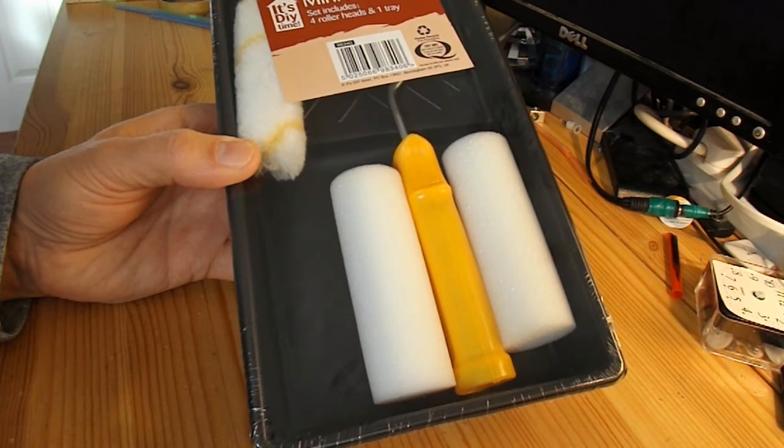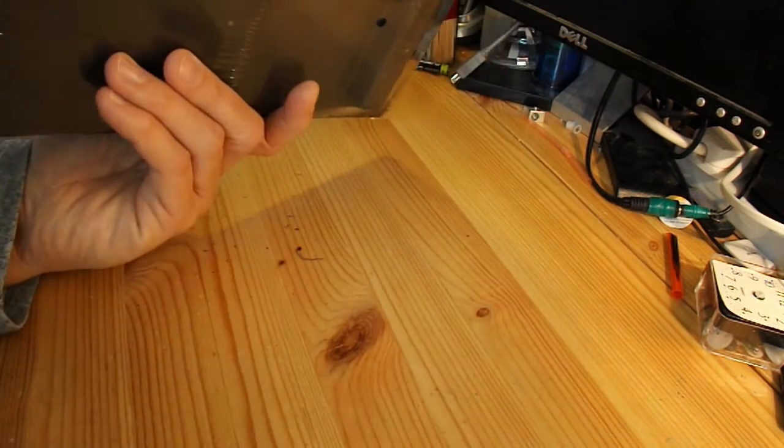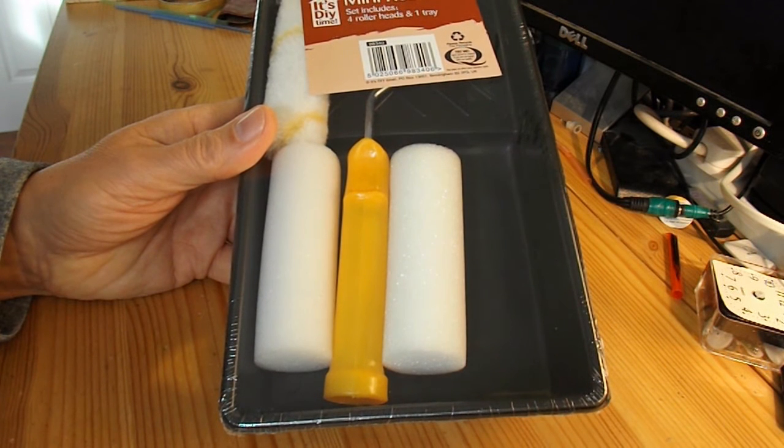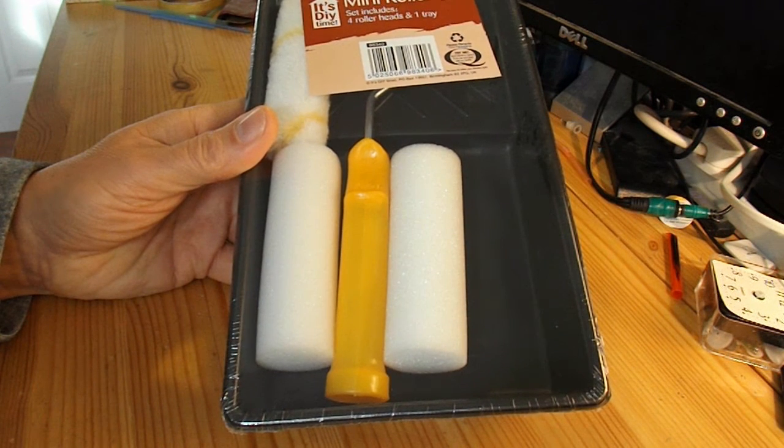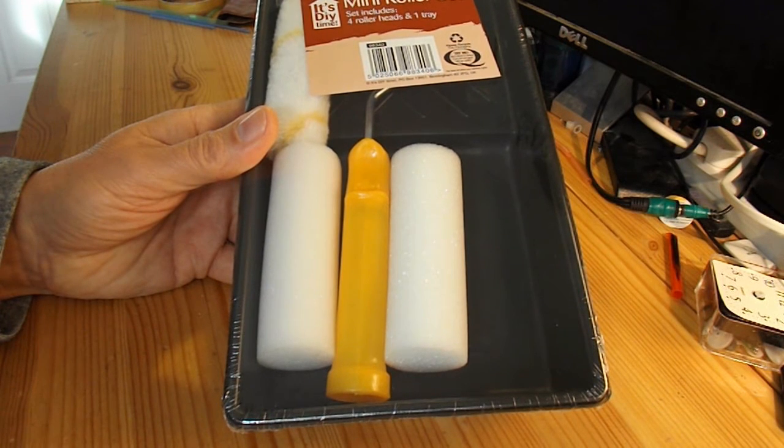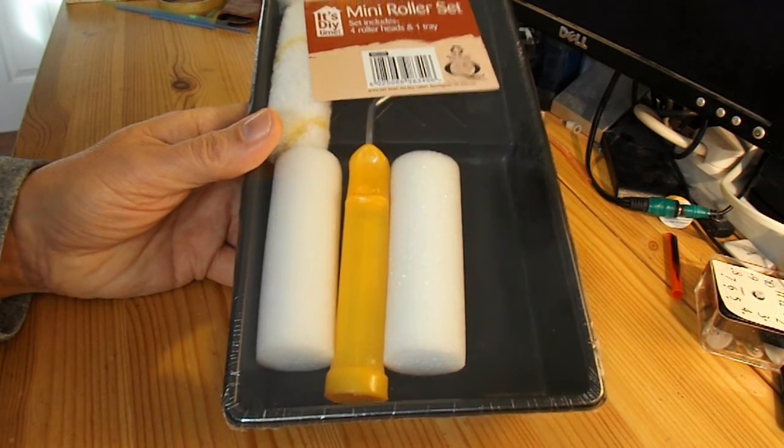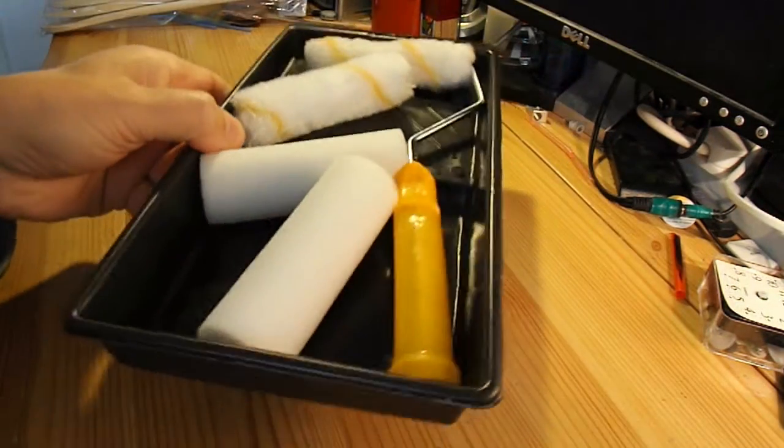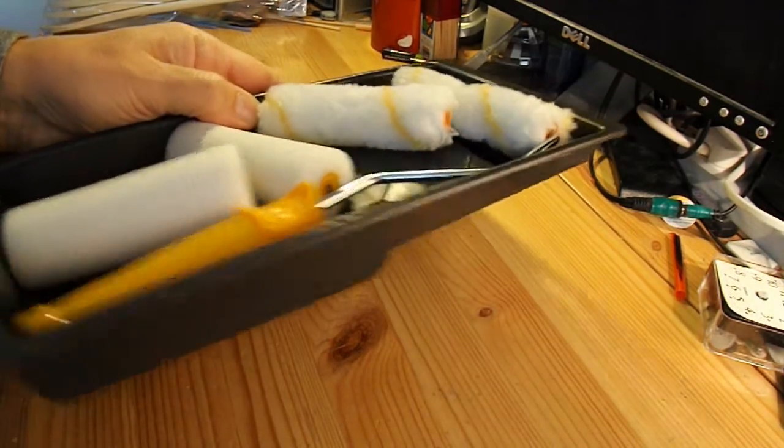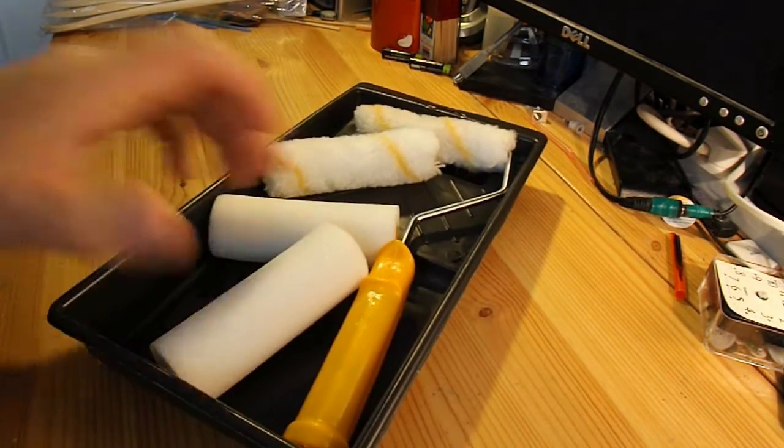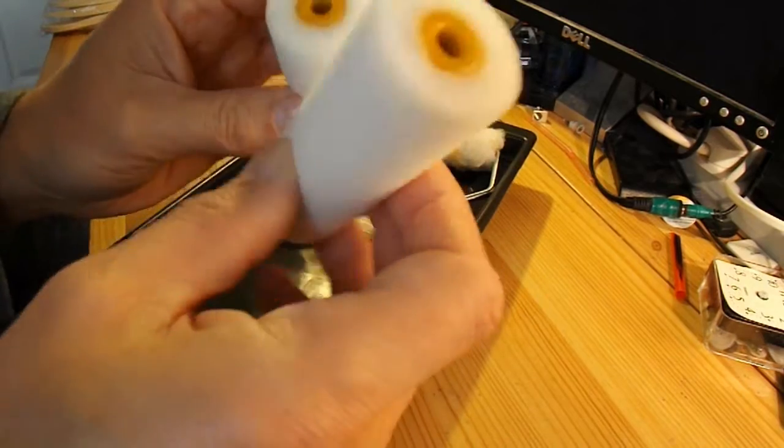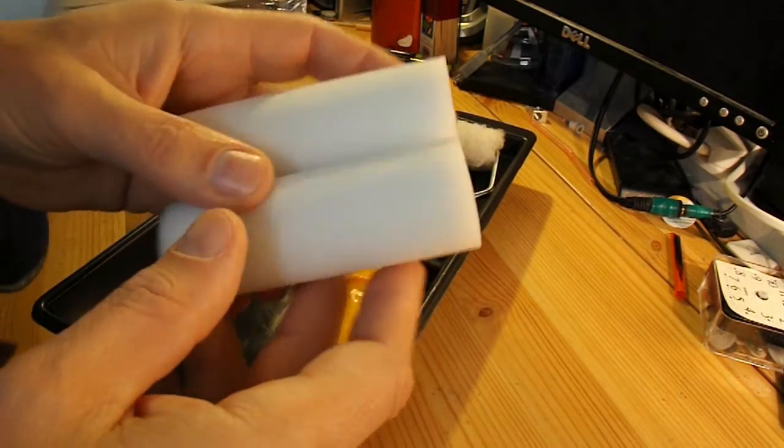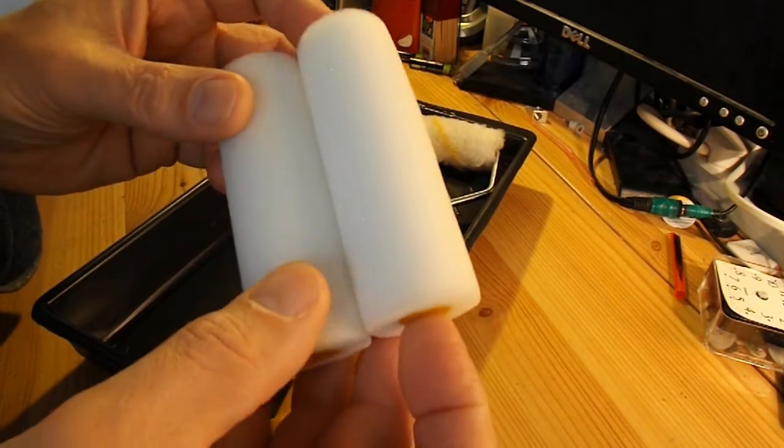And what are we going to do with them? Well, I'm torn between doing a mousetrap car or a rubber band powered car. I reckon I could do both with both of these. Starting with the foam roller. I quite fancy using these bits actually as wheels. Might be a bit impractical for today's project so I'll save them.